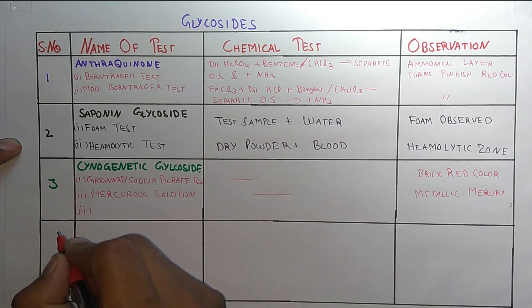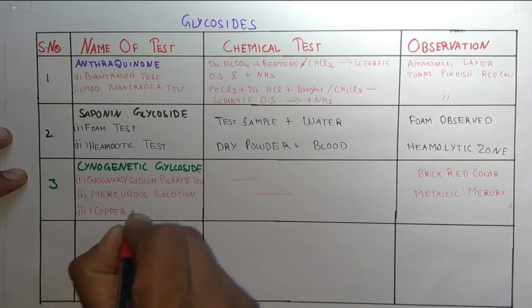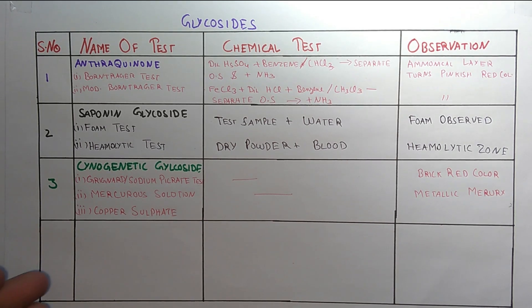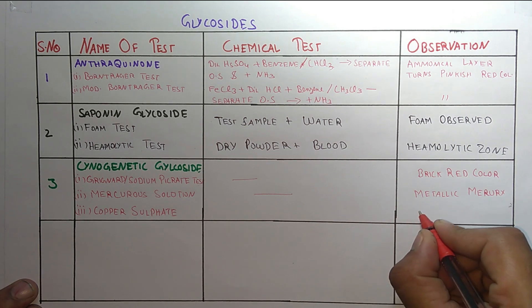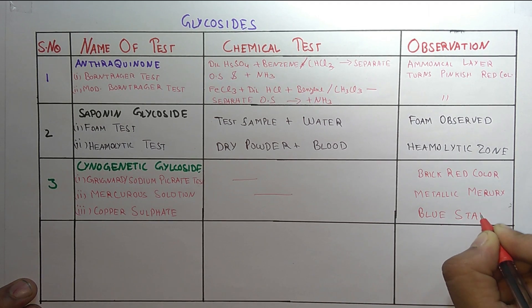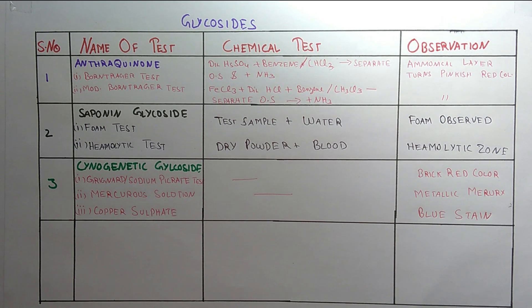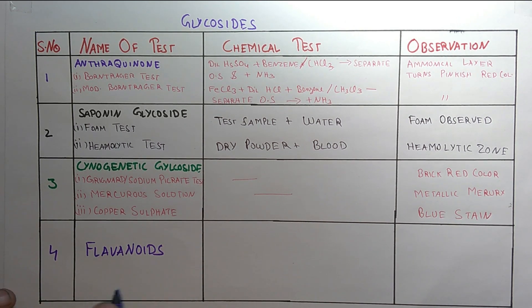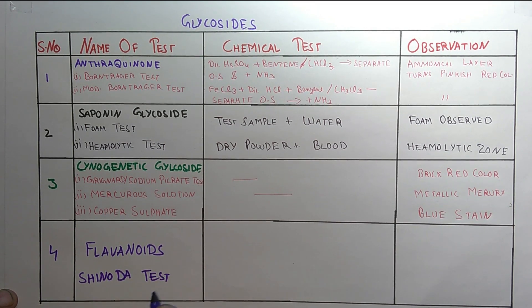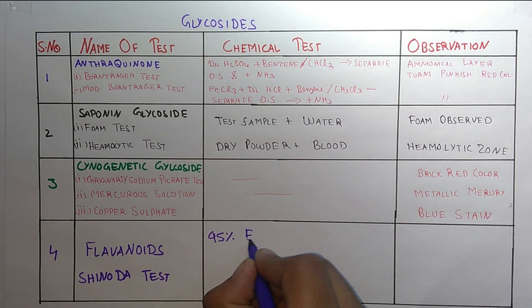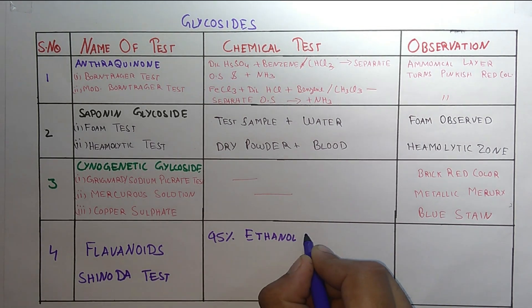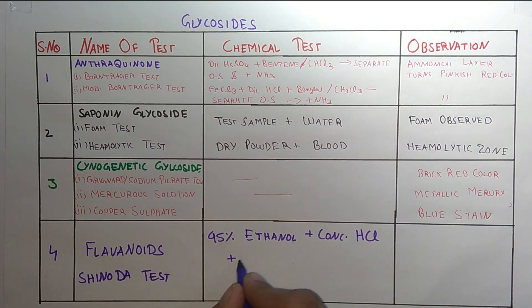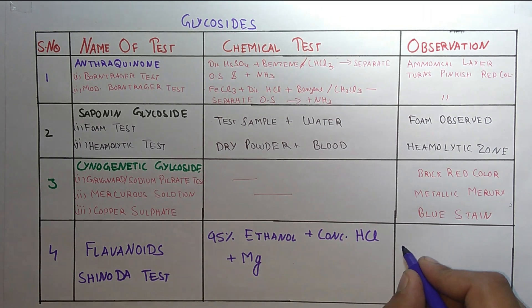The third test for cyanogenetic glycosides is the copper sulfate test. We use copper sulfate solution and the observation is that a blue stain is observed. Now the last type is flavonoids. The test for flavonoids is the Shinoda test. In this we take 95% ethanol plus concentrated HCl plus magnesium, and the observation is that a pink color is produced.